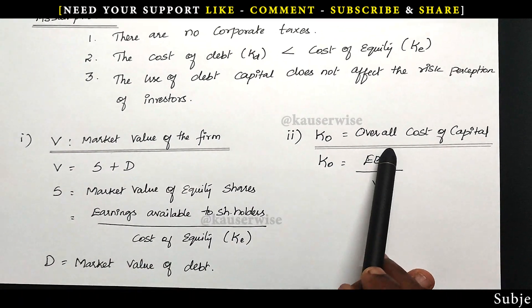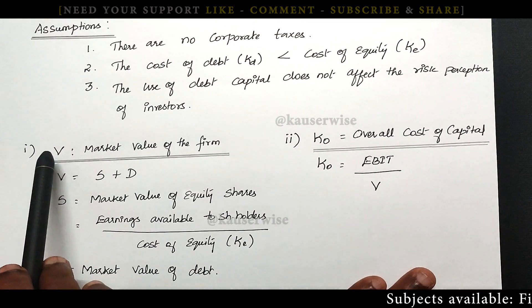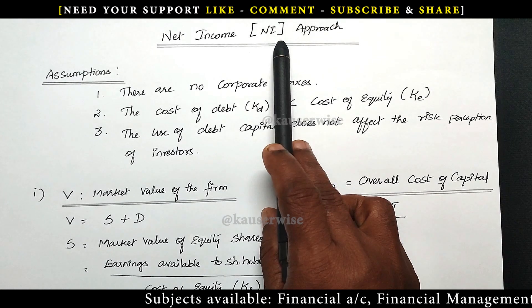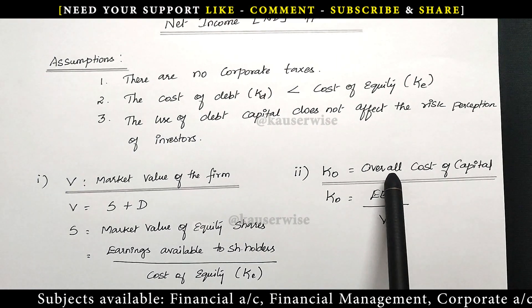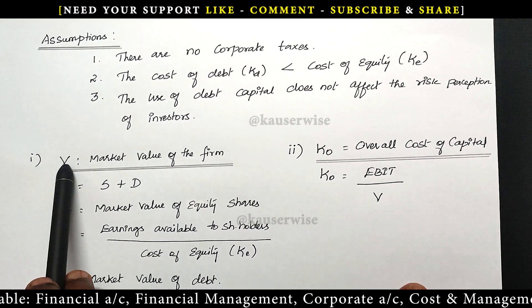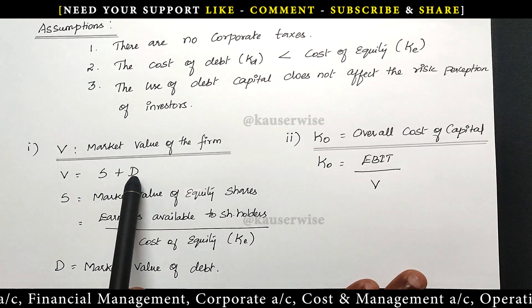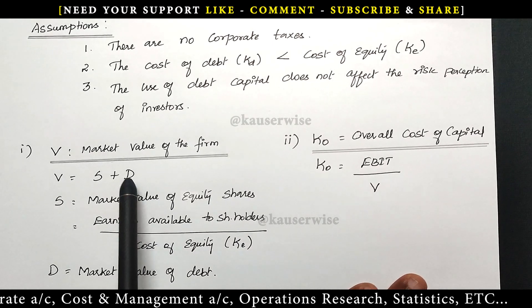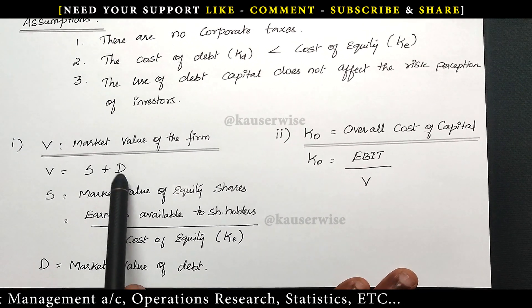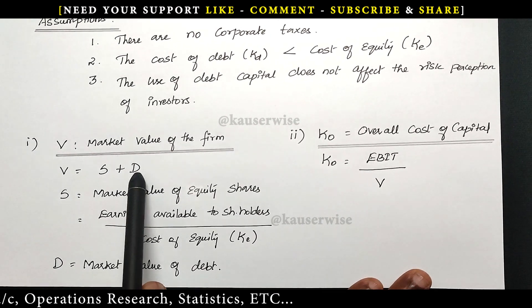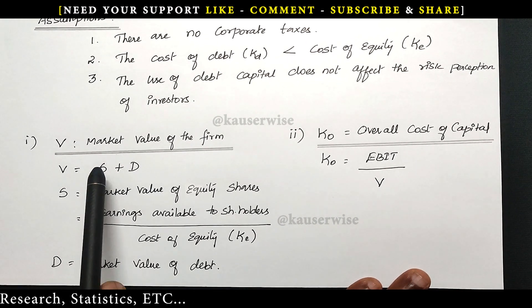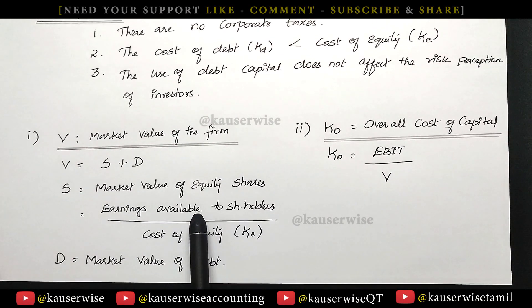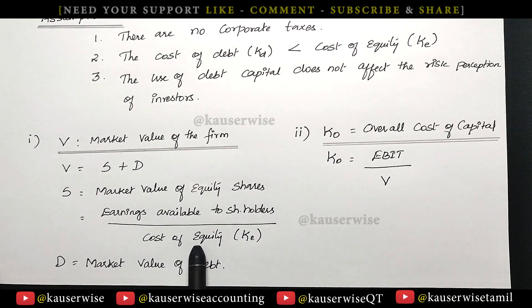There are two important components. The first is V, which refers to the market value of the firm. The formula for V is: V equals S plus D, where S refers to the market value of equity shares and D refers to the market value of debt. Debt will be given in the problem — it can be debentures, borrowings, or long-term loans. S, the market value of equity shares, is calculated using the formula: earnings available to equity shareholders divided by cost of equity, that is KE.